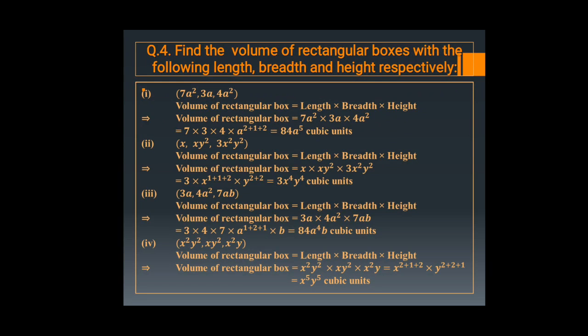The next part again has three sides. Multiply all the sides: 3a into 4 square into 7ab. Coefficient: 3 into 4 into 7 is 84. Power of a is 1 plus 2 plus 1, and then the power of b is calculated accordingly.